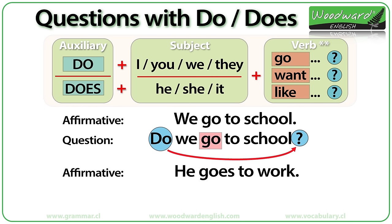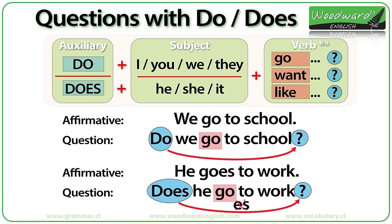He goes to work. This is an affirmative sentence. How do we make it a question? DOES, because it is HE. DOES HE. Now look at the verb — it is GO. But why GO and not GOES? Because with questions the verb is in the base form of the infinitive. The infinitive is TO GO and we remove the TO part and only put GO. Does he go to work?